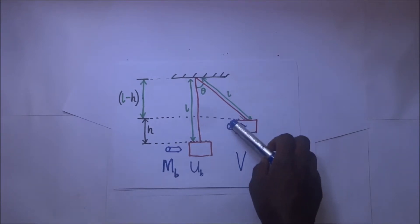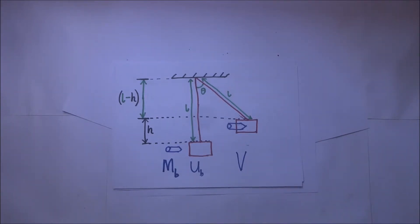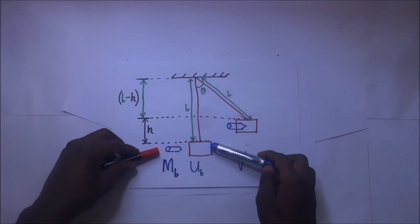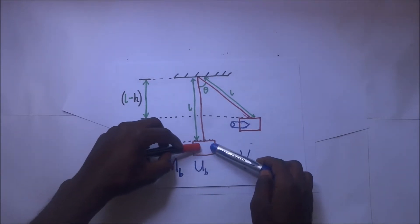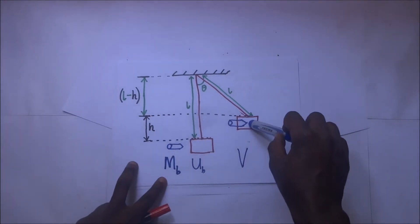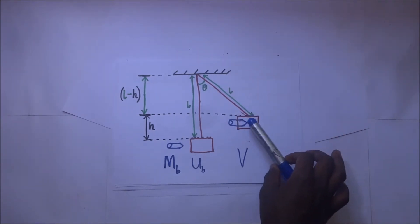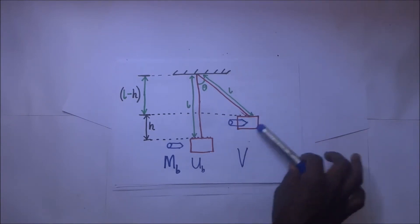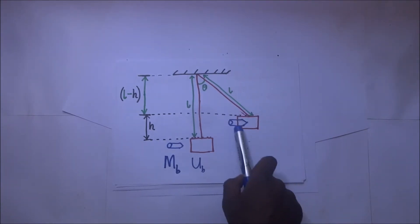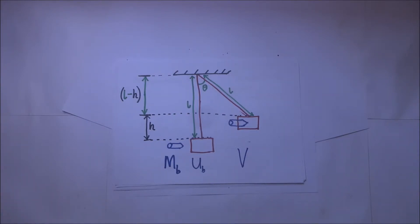When the composite body is momentarily at rest at maximum height, all kinetic energy has been converted to potential energy. This is the principle of conservation of energy: energy is never created nor destroyed, but can be transformed from one form to another. In this case, the kinetic energy of the composite body after collision equals its potential energy at the highest point. We will use these two mechanical principles to derive our expressions.